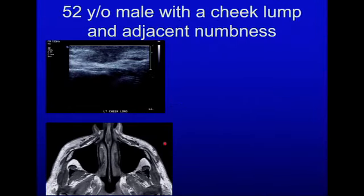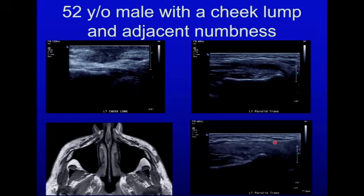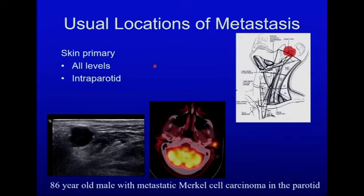Here is an example of a small primary SCC of the skin in the mid-face in a 52-year-old male, shown on high-resolution ultrasound. Unfortunately he presented with numbness. Images through the parotid demonstrate branching hypoechoic linear structures — the branches of the facial nerve — which are usually not visible but can be seen here due to extensive perineural tumor. Metastasis in the head and neck from a skin primary has a propensity to involve the periparotid and intraparotid lymph nodes.